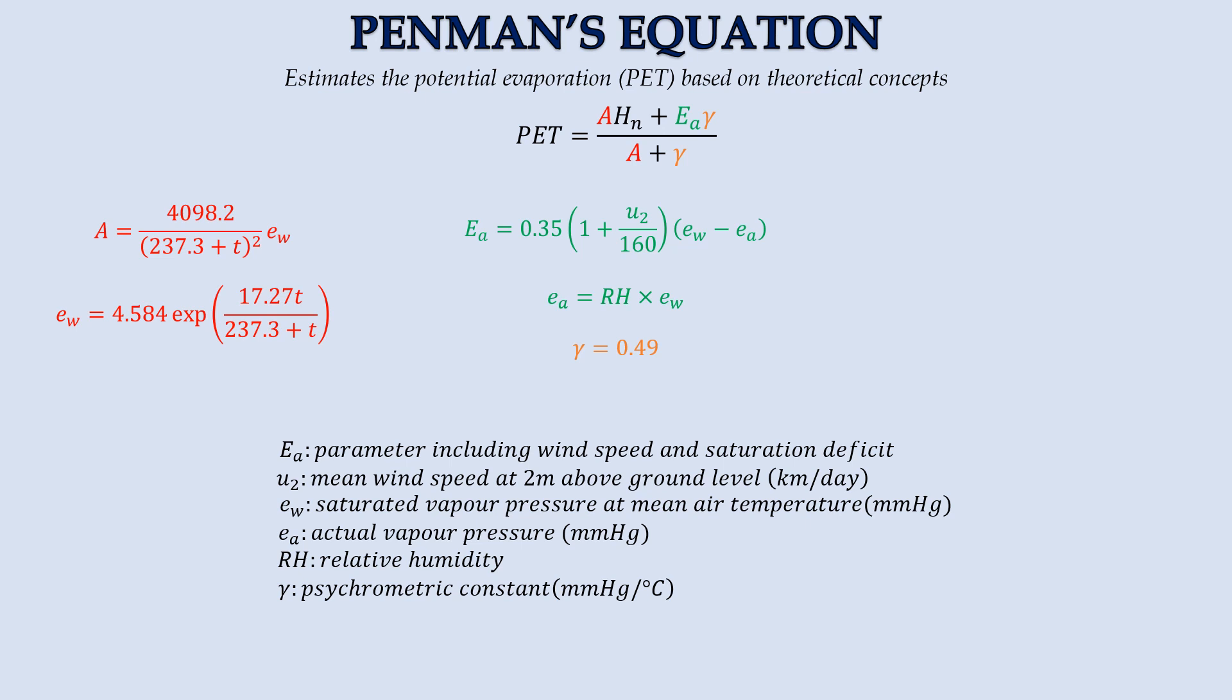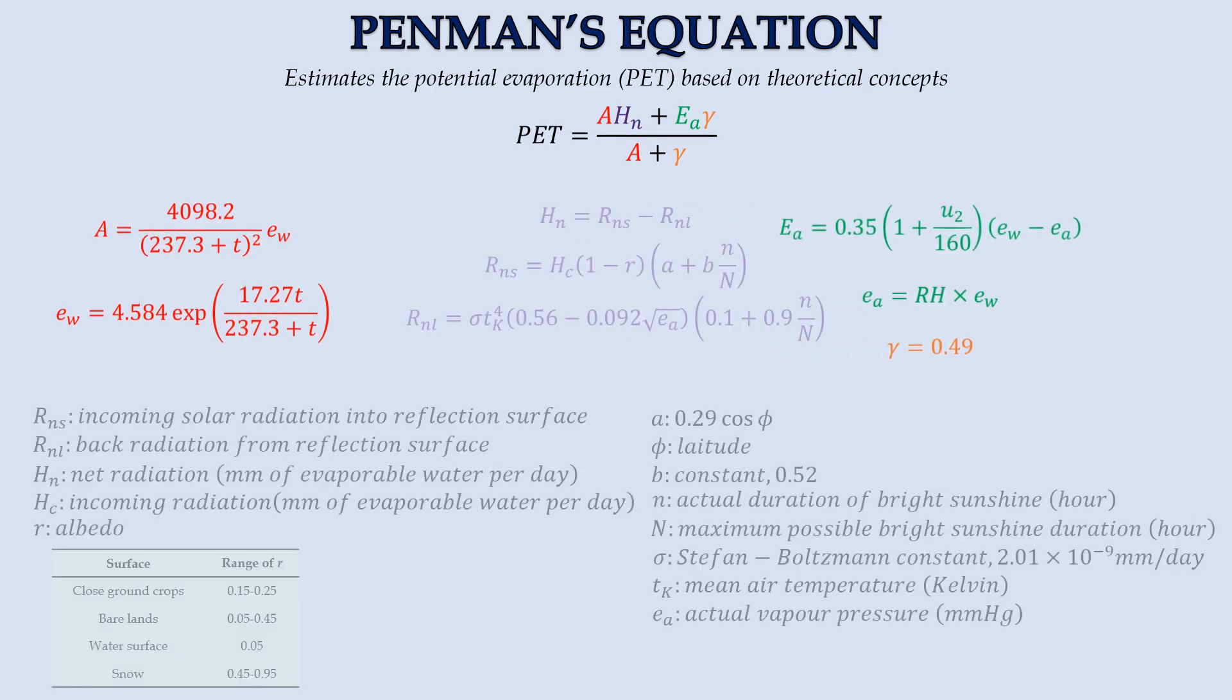Gamma is defined as psychrometric constant, and it is taken as 0.49 mm of mercury per degree Celsius.